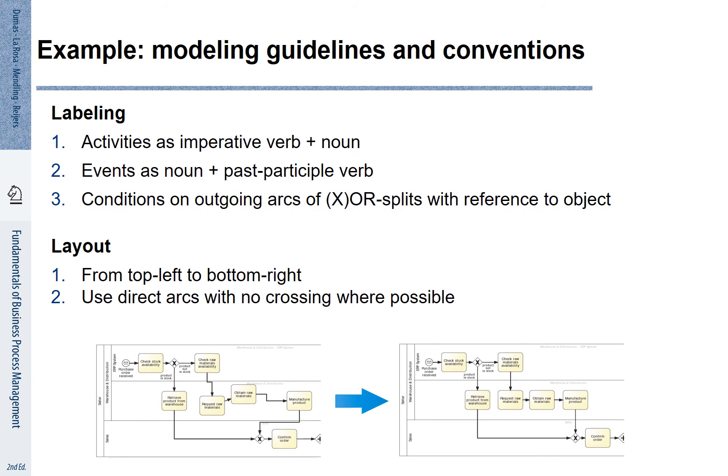Furthermore, we should also make sure that the layout is nice. Models should run from top left to bottom right. We should use direct arcs with no crossings. Look at the two models at the bottom of this picture. The left-hand side is exactly the same as the one on the right-hand side with the only difference that the layout is effective on the right-hand side. You see what a difference it makes in the impression and reading of this process model. Beauty is not an option. Make sure that your models look nice.